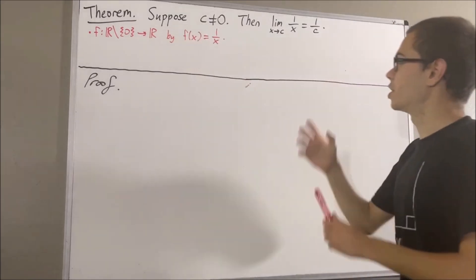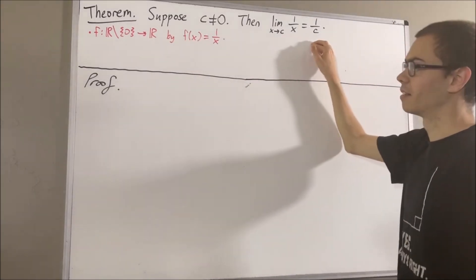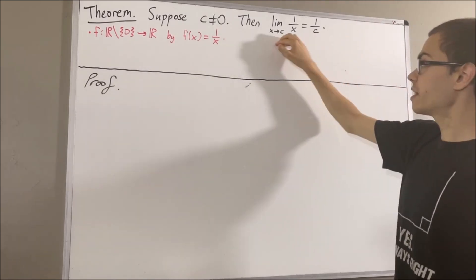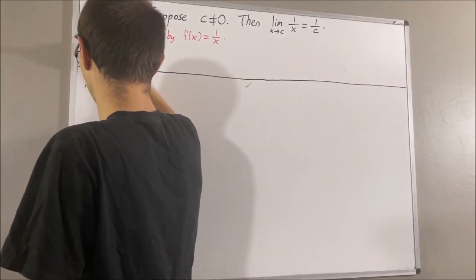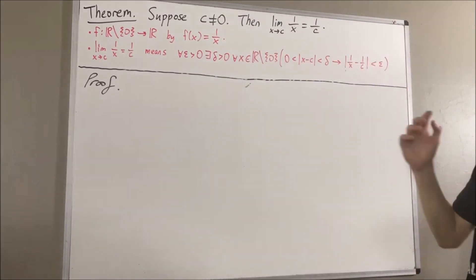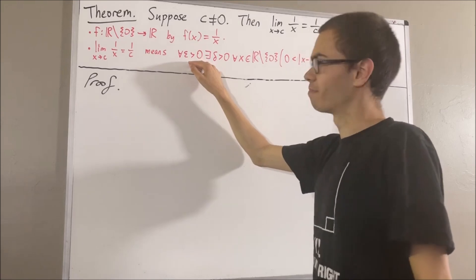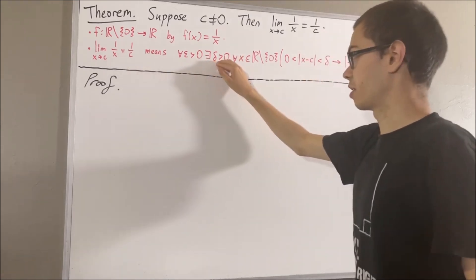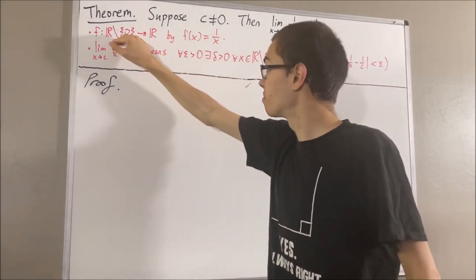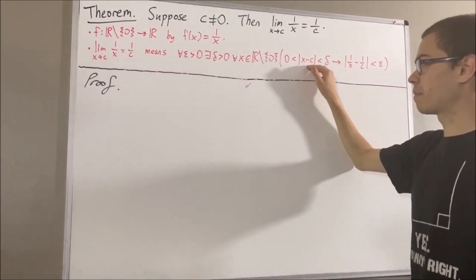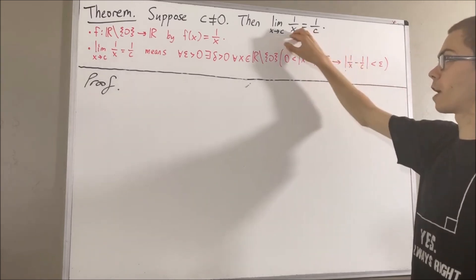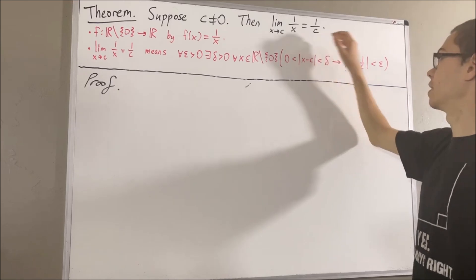The whole goal is to prove this limit. And by the epsilon-delta definition of a limit, this means the following: for every epsilon greater than 0, there exists a delta greater than 0, such that for all x in the domain of our function, if 0 is less than the absolute value of x minus c is less than delta, then the absolute value of 1 over x minus 1 over c is less than epsilon.